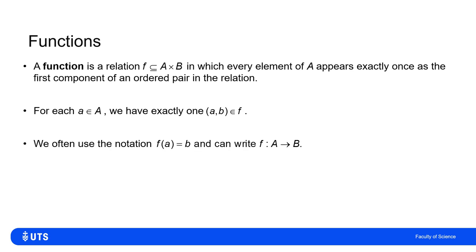We can write f(a) equals b, meaning if the first element of the ordered pair is a, then under the relation f, the second element must be b. We write that f maps the set A to the set B.